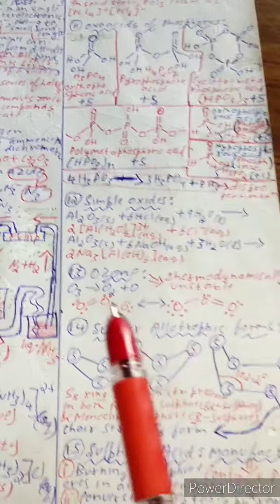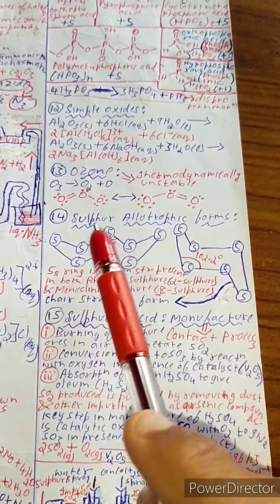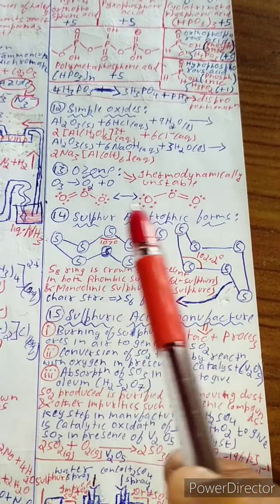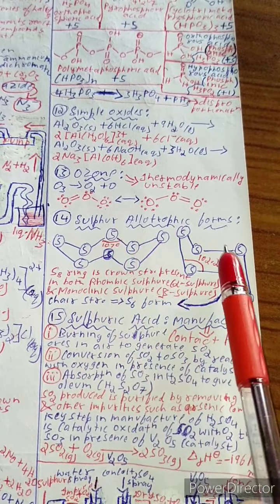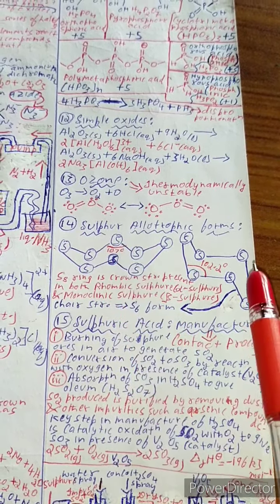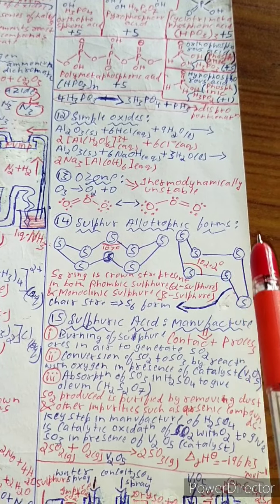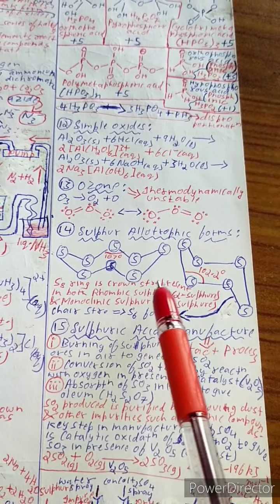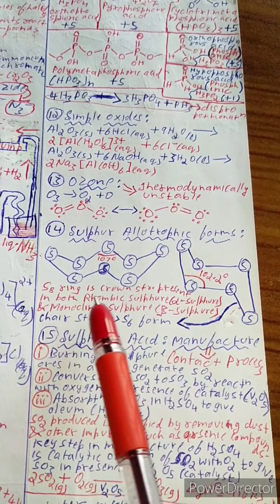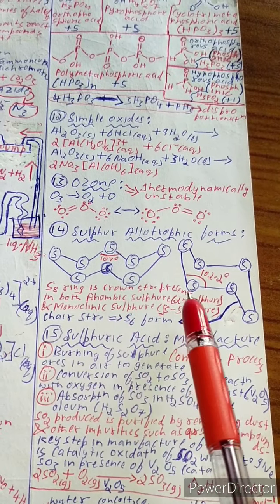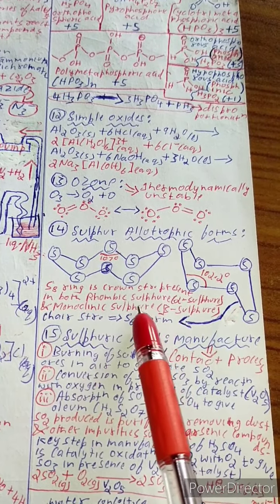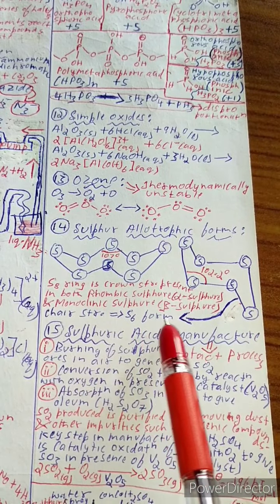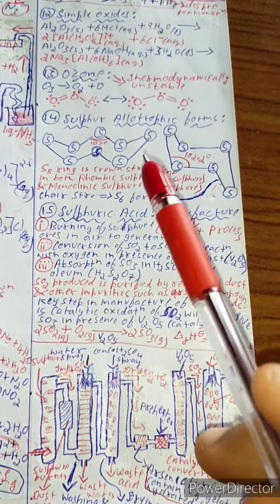Allotropic forms of sulfur: sulfur has two allotropic forms. The S₈ ring is crown-shaped, present in both rhombic sulfur (alpha sulfur) and monoclinic sulfur (beta sulfur). The S₆ form is chair-shaped.